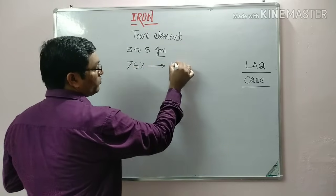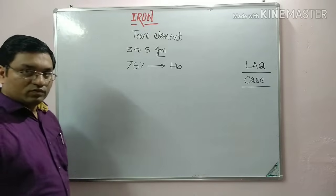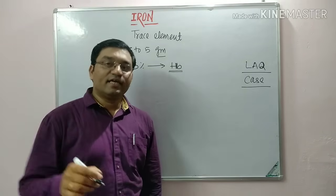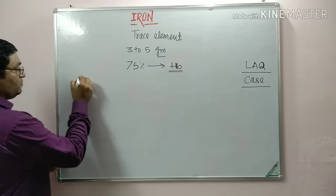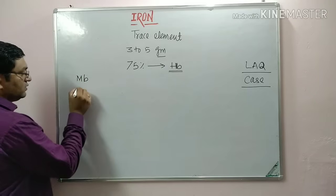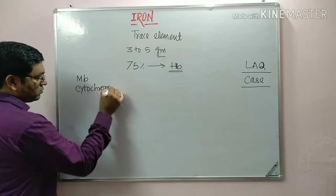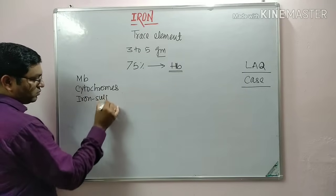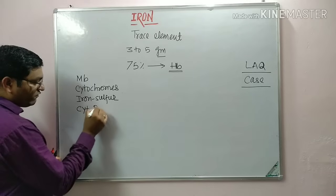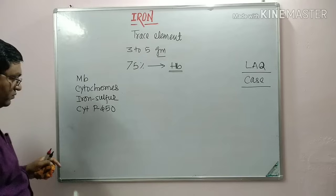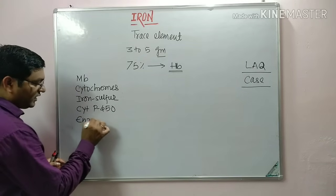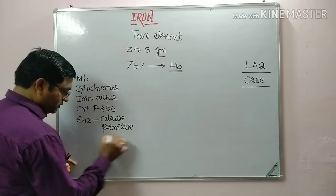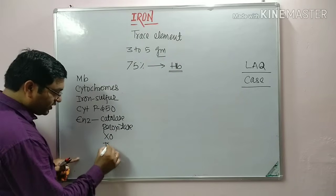Of the total body iron, 75% is present in hemoglobin, so iron is an important constituent of hemoglobin. Other proteins which contain iron are myoglobin, cytochromes, iron-sulfur proteins, cytochrome P450, and some enzymes including catalase, peroxidase, xanthine oxidase, and tryptophan pyrolase.